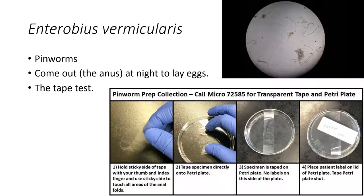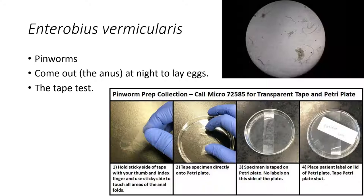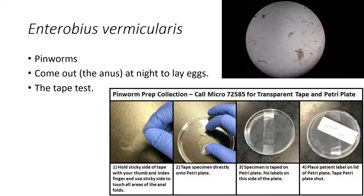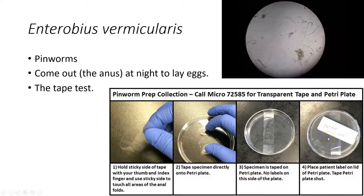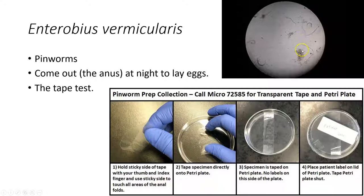Pinworms' hallmark trait is that they live in the digestive system but come out at night to lay eggs — crawling out and gluing eggs around the anus with an itchy adhesive, which causes scratching the next day and restarts the cycle. The classic diagnostic test is the tape test: stick scotch tape to the anal area, pull it off, and examine for eggs under a microscope. Live pinworms are very small and require a microscope to see.